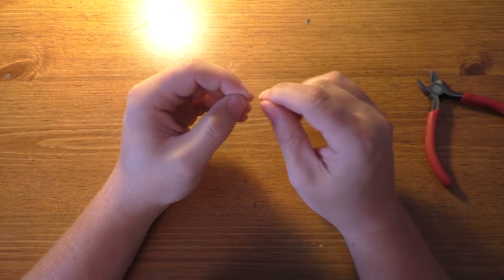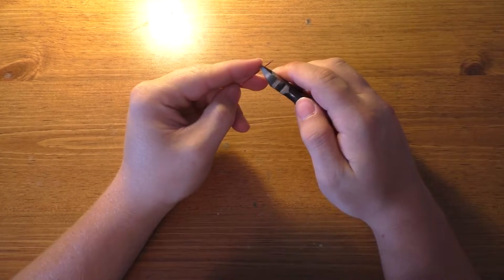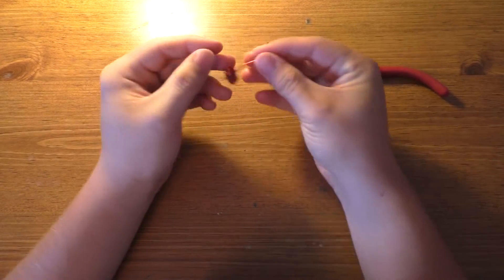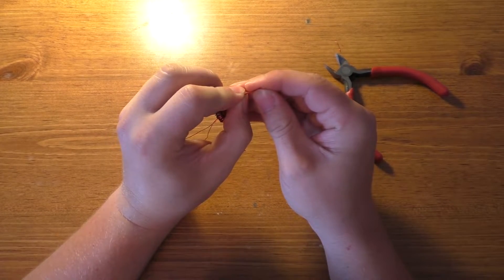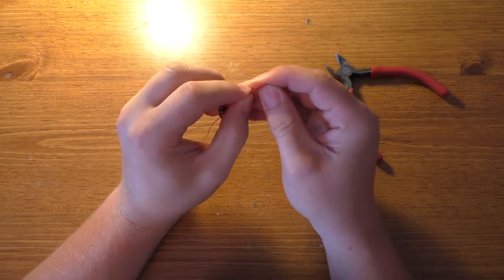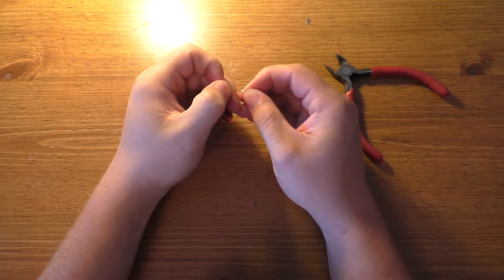And we'll untwist it a little bit so we can actually get to the wires. Something like that. Do that on the other end as well. And I'll go ahead and cut these off so that they're even. Just a little bit off. And then have the same amount of wire on both sides as well.